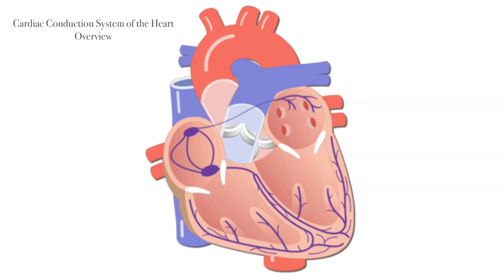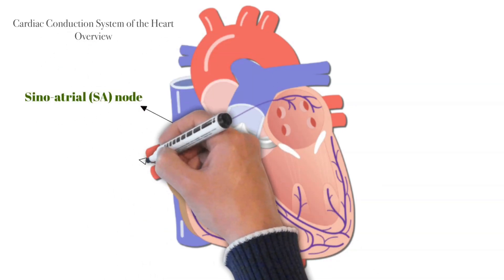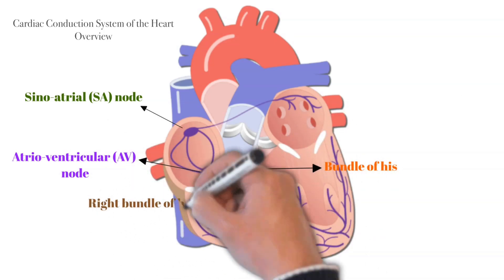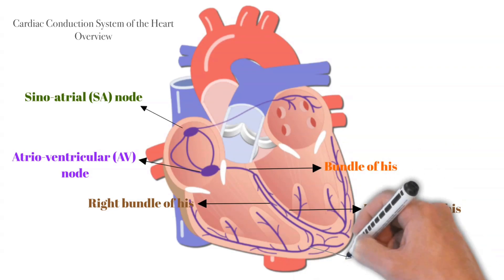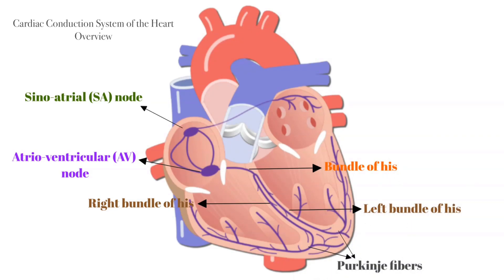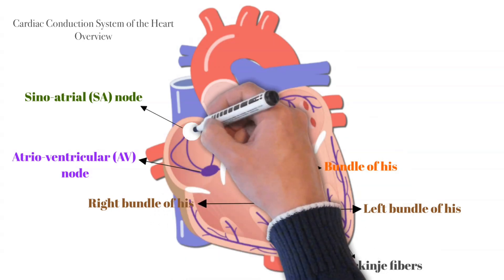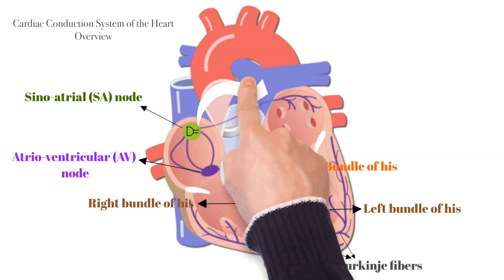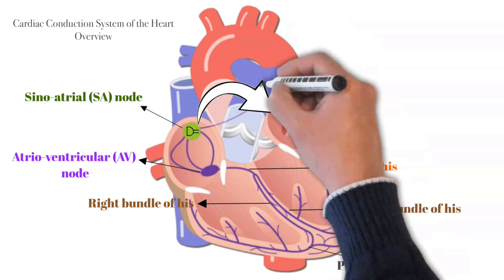This pathway is made up of five elements: the sinoatrial node or SA node, the atrioventricular node, the bundle of His, the left and right bundle branches, and the Purkinje fibers. The SA node is located in the right atrium near the entrance of the superior vena cava. This is the natural pacemaker of the heart — this is where all heartbeats start and it determines the heart rate. Electrical impulses from the SA node spread throughout both atria and stimulate them to contract.